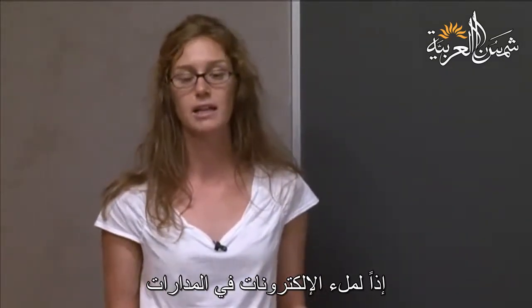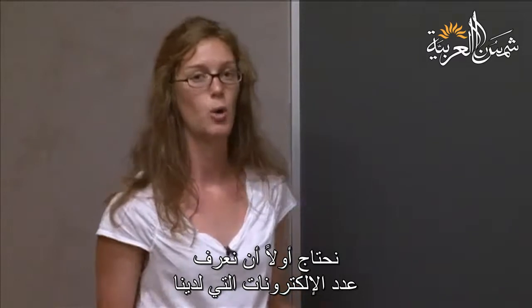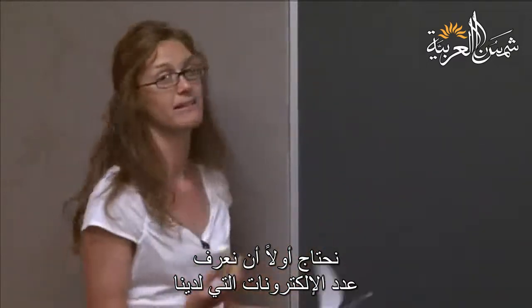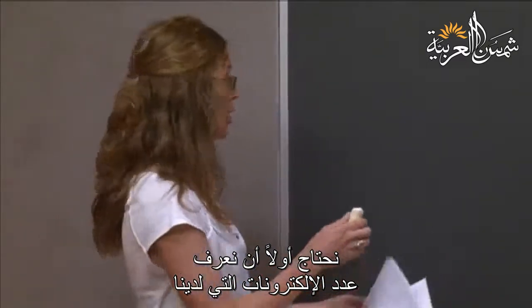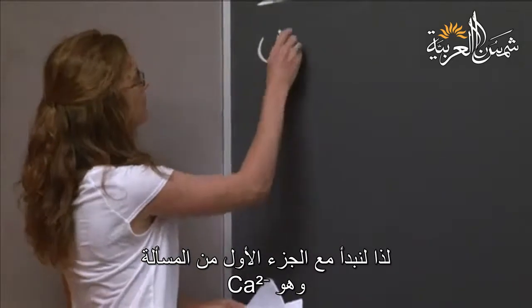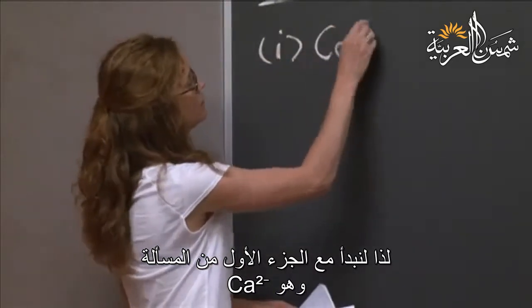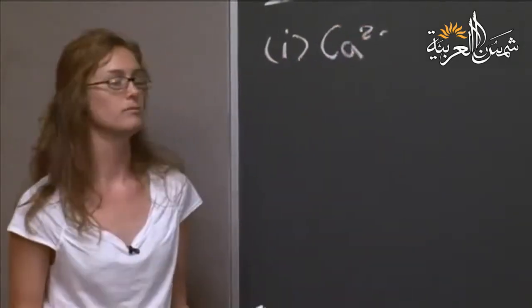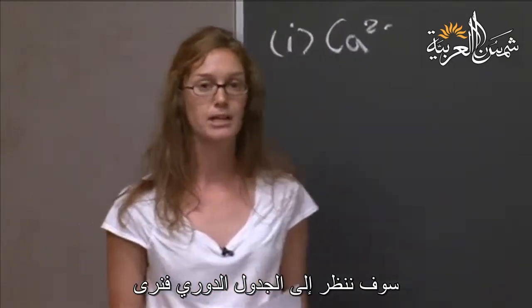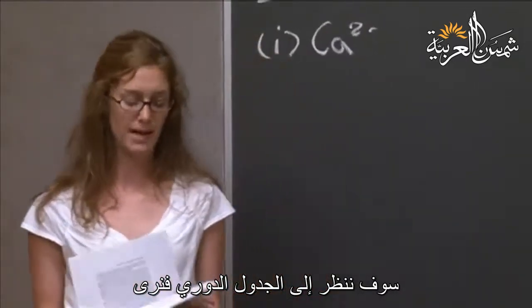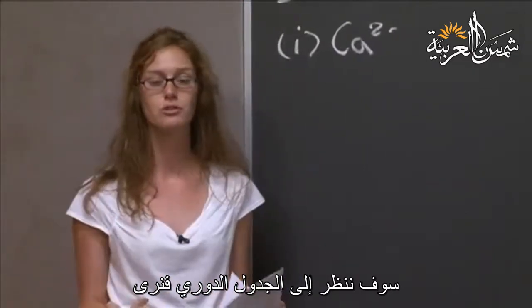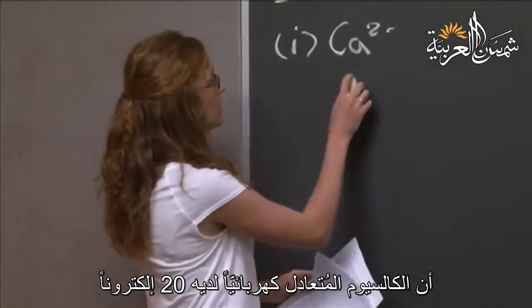To assign electrons to orbitals, we first need to know how many electrons we have. So let's start with the first part of this problem, which is calcium 2 minus. We will look at our periodic table and see that calcium has 20, neutral calcium has 20 electrons.